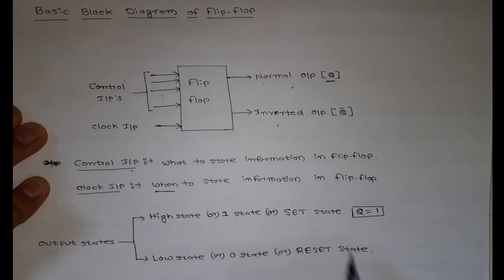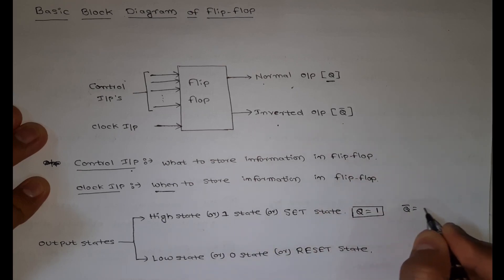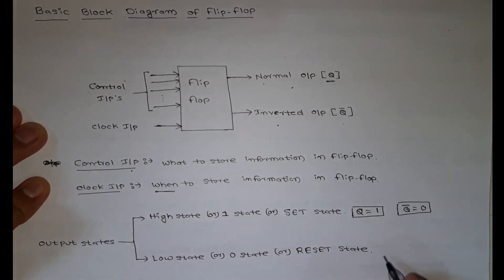one state, or set state. Then automatically Q̄ equals 0, because it is inverted output. When output Q equals 0, then Q̄ equals 1, so when output is 0, we call it low state, zero state,